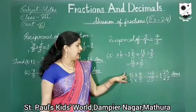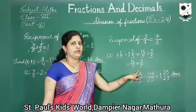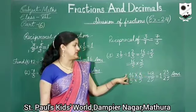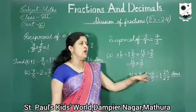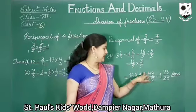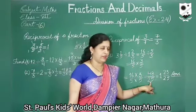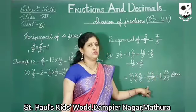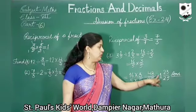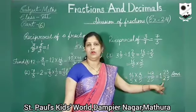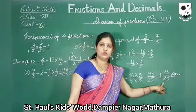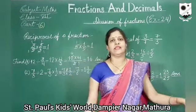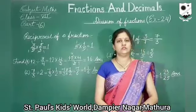Now multiply numerator by numerator and denominator by denominator. It gives 16 times 3 equals 48, and 5 times 5 equals 25. You can change it to mixed fraction also — it gives 1 whole 23 upon 25. Got it, students? Thank you. You can do exercise 2.4 in your work.